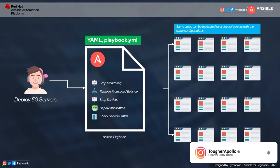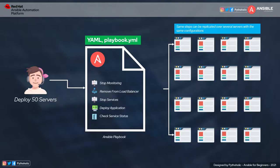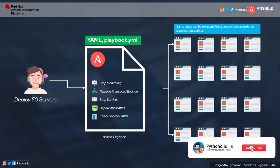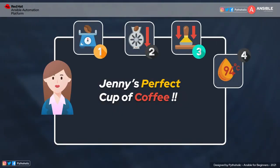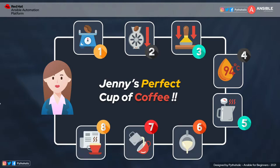The steps we write in our playbook can be executed across multiple servers with the help of the inventory file, as we saw in the last episode. Remember that the extension for YAML files will be .yml or .yaml and we pronounce it as 'YAML'. So whenever you communicate with someone about sharing the file, you'd say 'playbook.yml' — you are referring to a YAML file. Now let's understand how we can use YAML, and for that we need to understand Jenny's perfect cup of coffee once again.